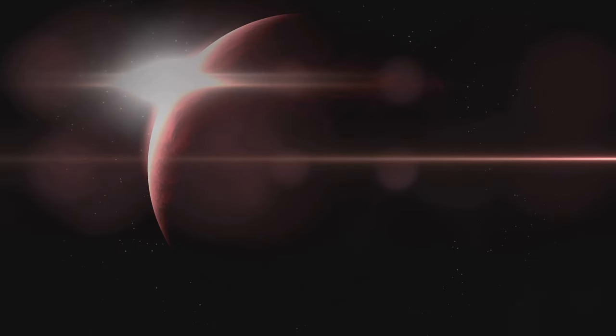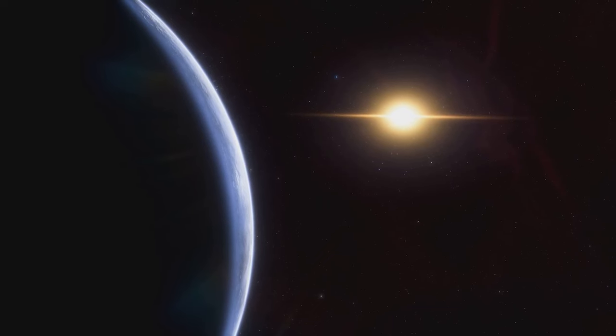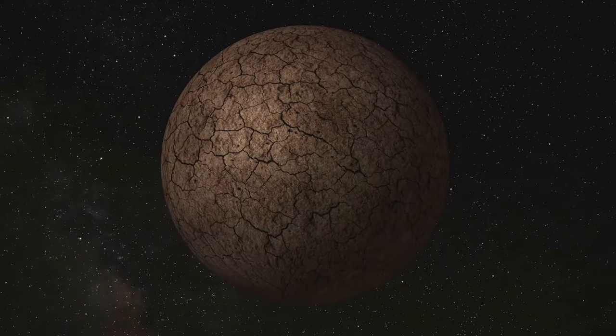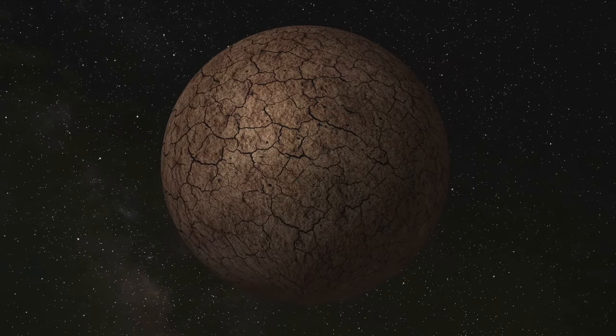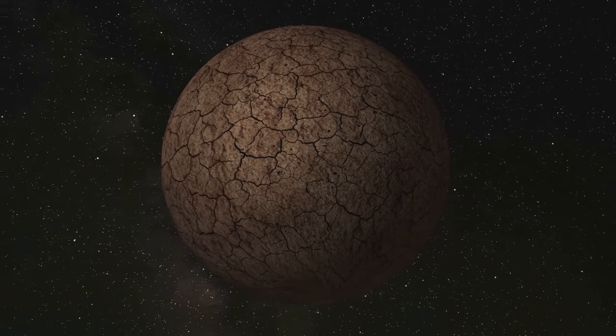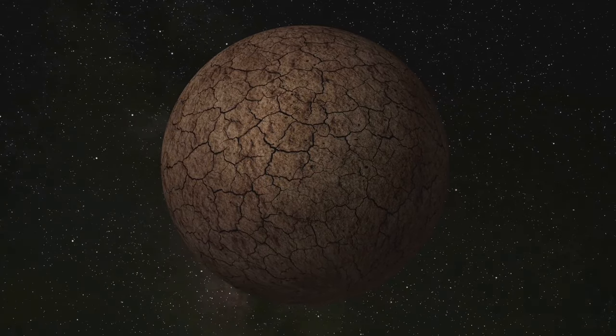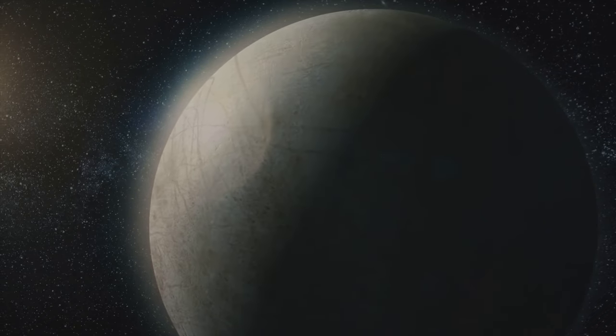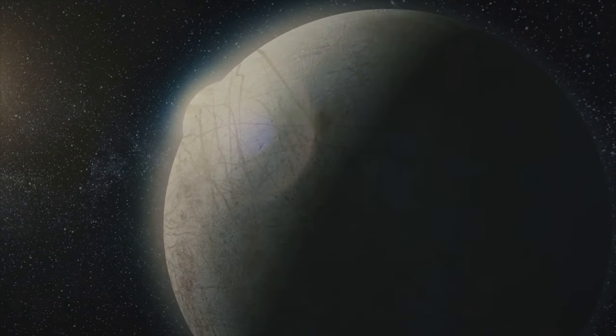However, Gliese 581c orbits a red dwarf star, much smaller and cooler than our sun. This means Gliese 581c receives less energy from its star and its habitable zone, the region where temperatures allow for liquid water, is much closer in. This proximity to its star has significant implications for the planet's potential habitability.